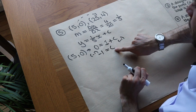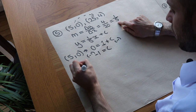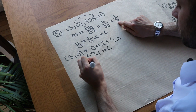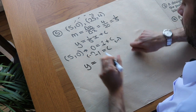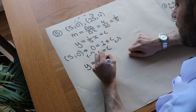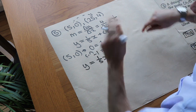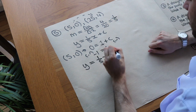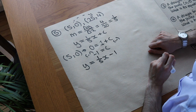We've got our c and our m, so we've got everything we need for the equation. y equals one-fifth x plus negative 1, and since plus negative 1 is the same as subtracting 1, we could write it as y equals one-fifth x minus 1.